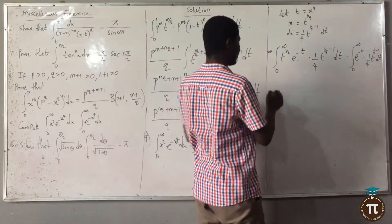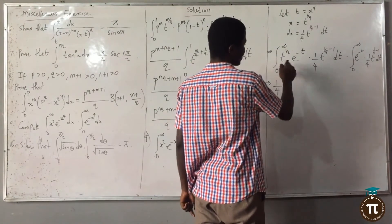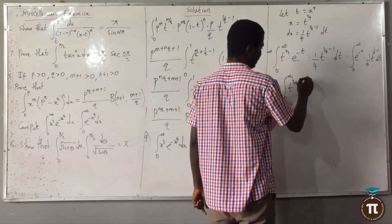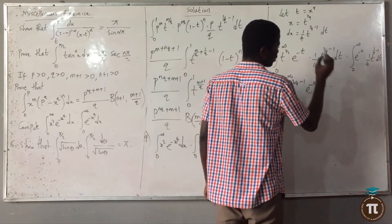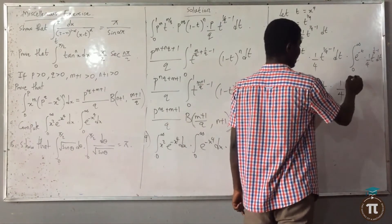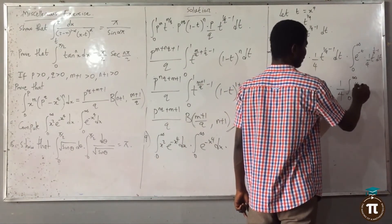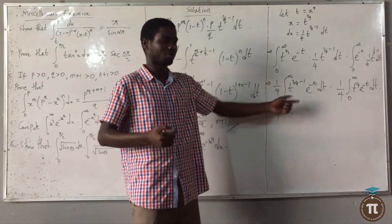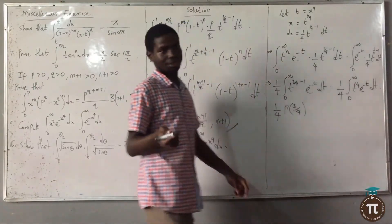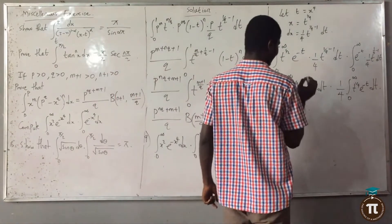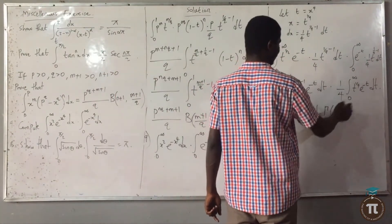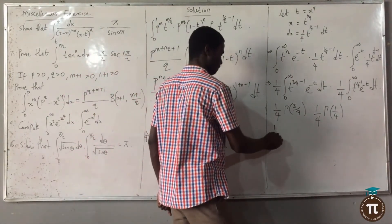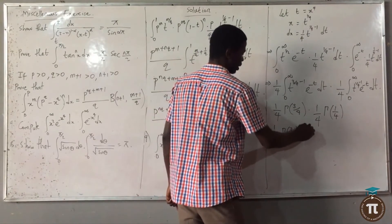Substituting: s^2 becomes t^(1/2), so the first integral becomes the integral from 0 to infinity of t^(1/2) · e^(-t) times (1/4) t^(1/4 - 1) dt. Taking 1/4 outside: this is (1/4) · integral from 0 to infinity of t^(3/4 - 1) · e^(-t) dt equals (1/4)·Gamma(3/4). The second integral gives (1/4)·Gamma(1/4). So the product is (1/16)·Gamma(3/4)·Gamma(1/4).